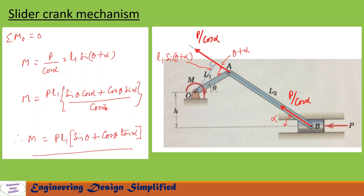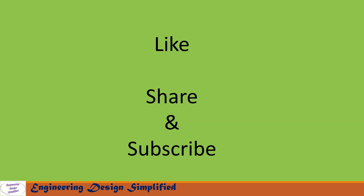After simplification, cos(alpha) cancels from the sin(theta)·cos(alpha) term, and sin(alpha)/cos(alpha) becomes tan(alpha). The final result is: M = P · l1 · (sin(theta) + cos(theta) · tan(alpha)), which is the moment on the crank required to hold the mechanism in position against force P. That's all for today's video — if you like this content please like, share, and subscribe. Thanks for watching.